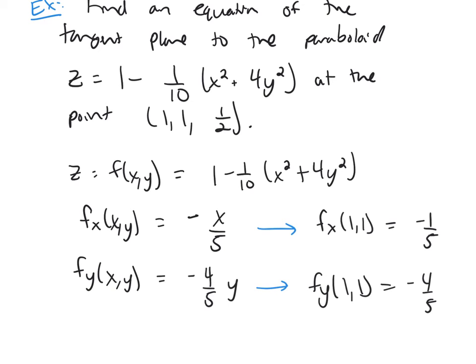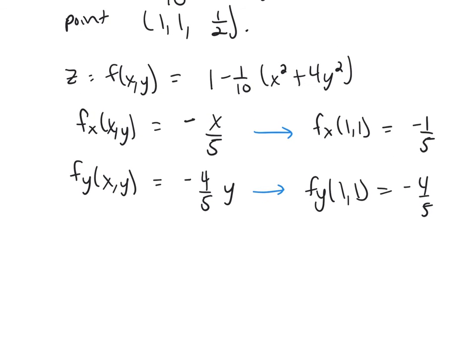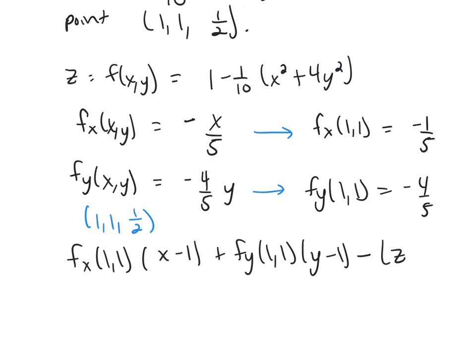So then to find the equation of my tangent plane, we go back to that formula. And the formula, it's f_x times (x minus 1) - remember what your point is, my point here is the point (1, 1, 1/2) - so plus f_y...